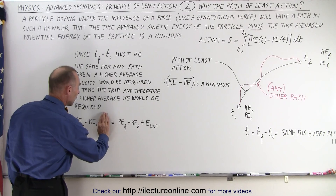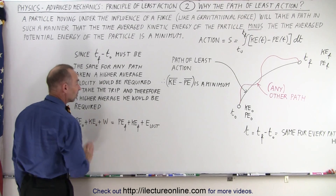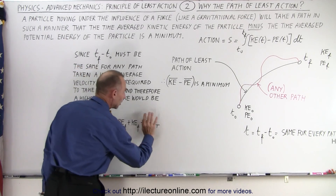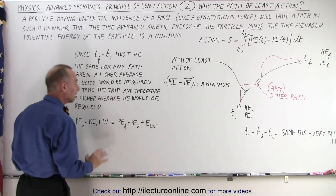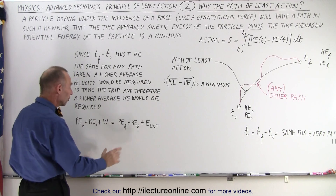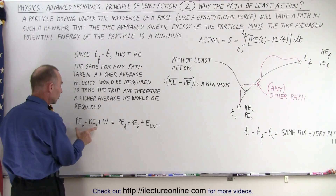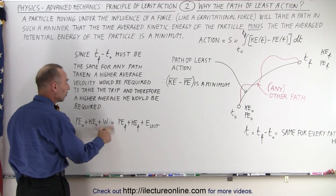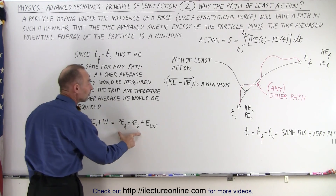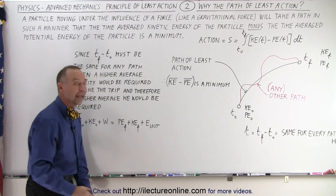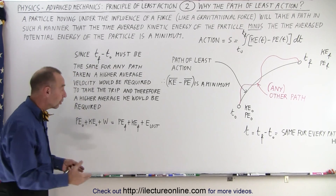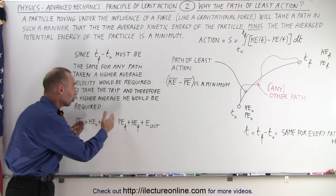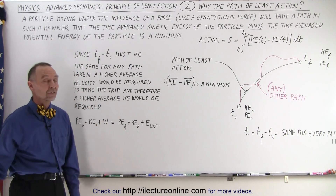Now, if both the amount of work put into the system and the energy lost by the system is zero, then again we see that the total initial energy must equal the total final energy, and the path taken by the particle will ensure that that's the case.